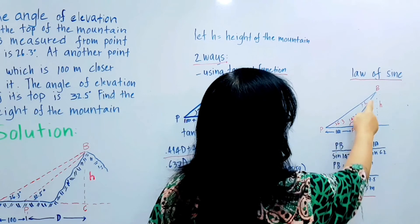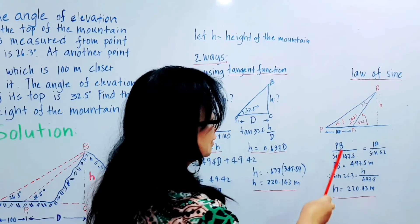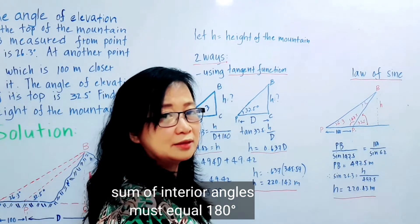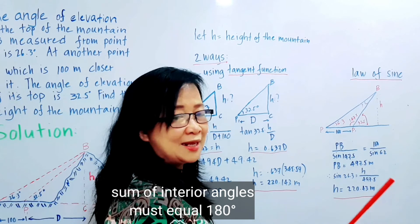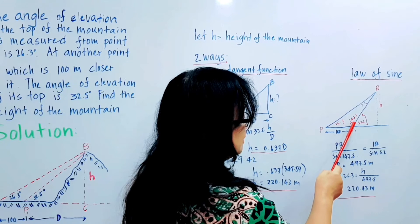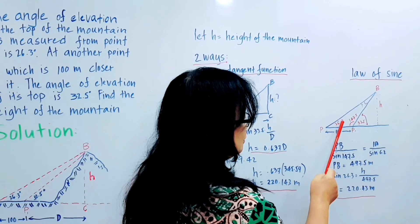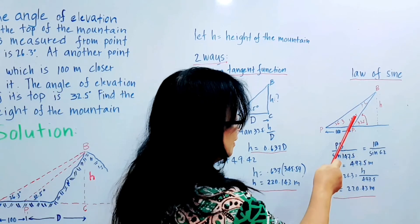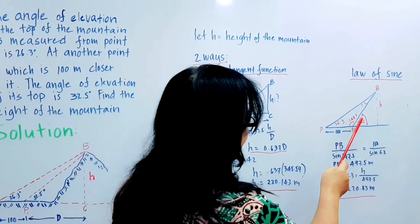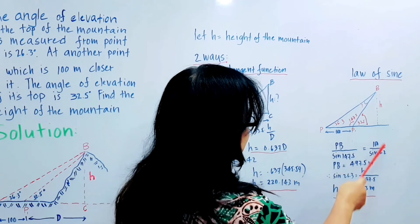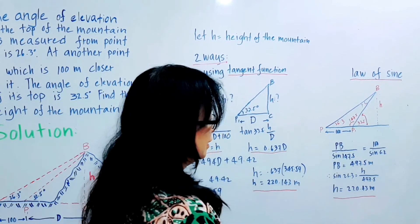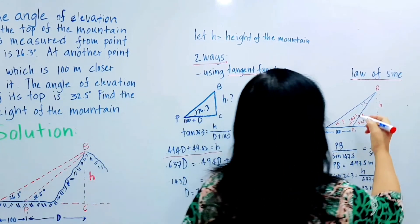In the interior angles, there are already two. In a triangle, the sum of all interior angles is 180 degrees. We have 26.3, then 147.5 added to this one, or 180 minus the sum of these two will result to 6.2. The third angle is 6.2.